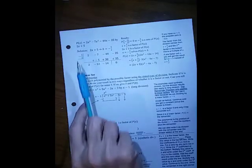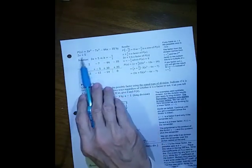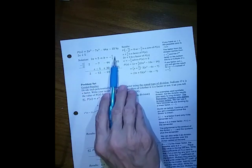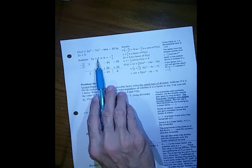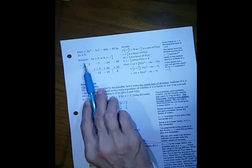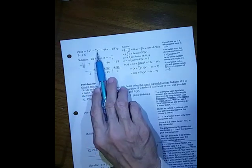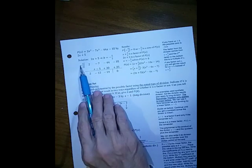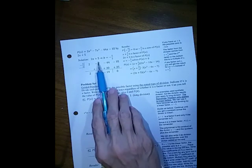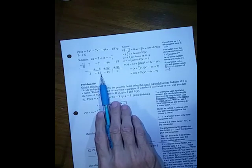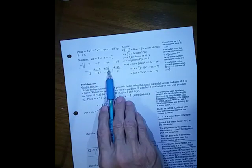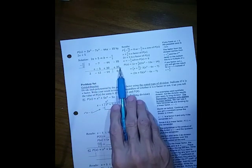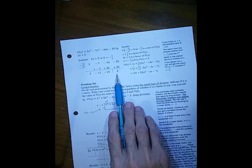As a third example, let's suppose we have something where we do not have a one in the front. The zero for that is minus five halves, the opposite of this number divided by this number. So minus five halves. Then we have two, minus seven, minus 44, and minus 35. Bring down the two. Multiply minus five halves times two is minus five, adding gives minus 12. Multiplying those is 30, adding is minus 14. Multiplying is positive 35, adding is zero.